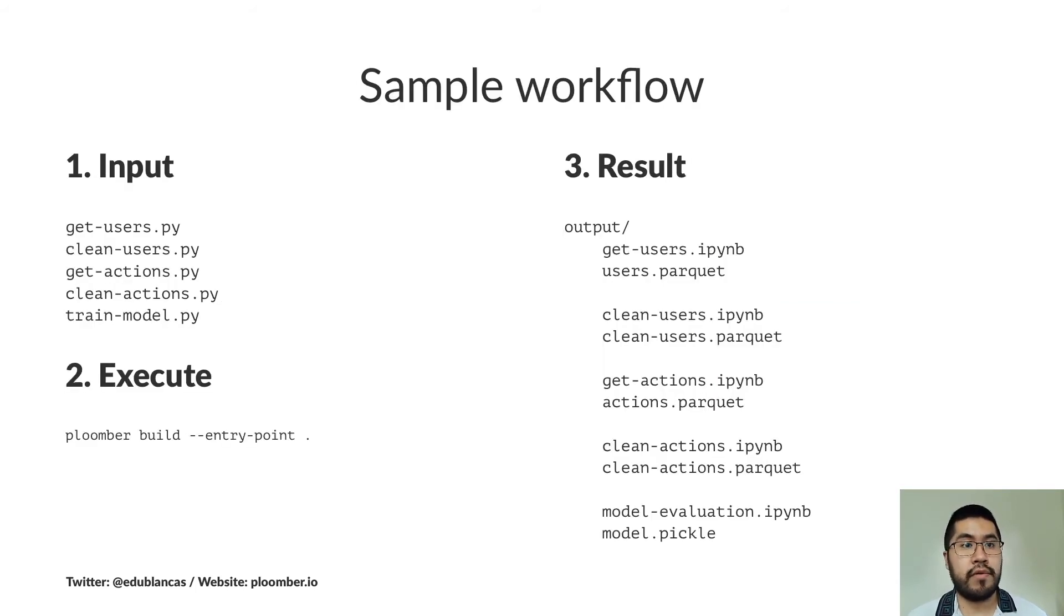Let's see a sample workflow. We start with five scripts, and this is the same pipeline that we have shown before. The way you run your pipeline is that you simply have to execute Plumber build. This command is going to create a file or PDF. But for now, we have these five Jupyter notebooks. We also have some data files that are generated from loading the data, from cleaning it. And finally, we see the model that we train and we save.